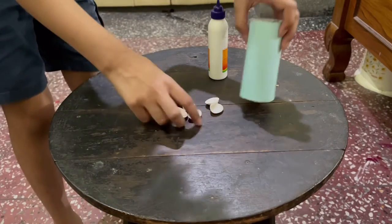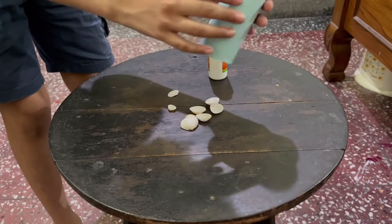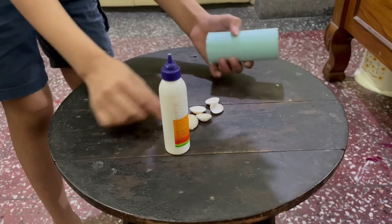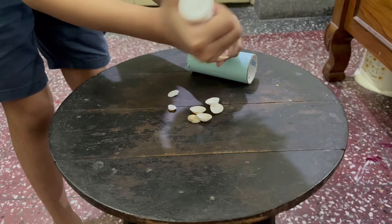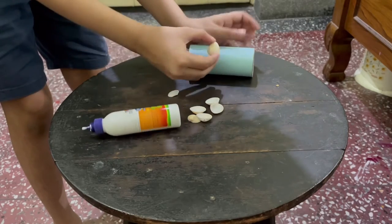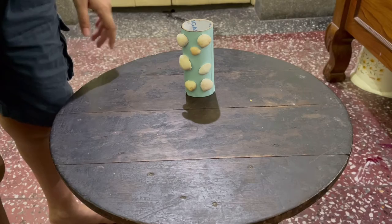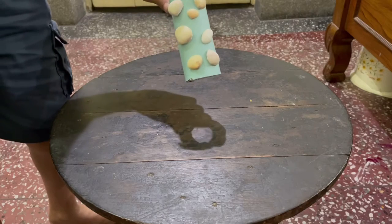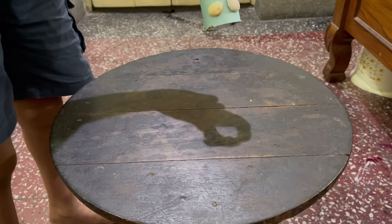Now we will stick some seashells on the cardboard tube with some glue. You can use double-sided tape instead of glue to stick on the seashells.